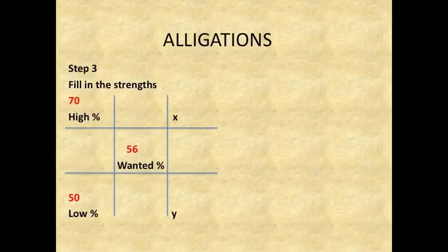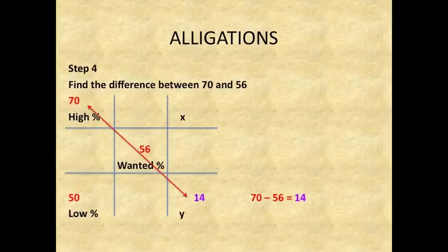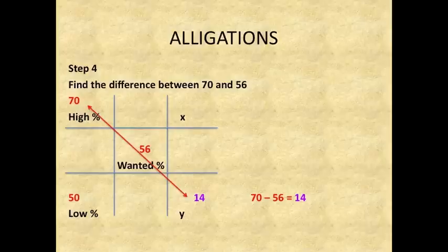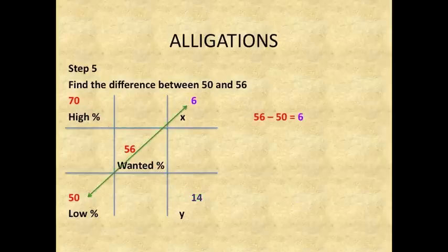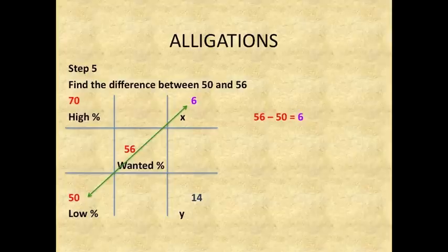Step 4: Find the difference between 70 and 56. 70 minus 56 equals 14, so you enter 14 in the square where the Y is. Step 5: Find the difference between 50 and 56. 56 minus 50 equals 6, so you enter the number 6 where the X is.